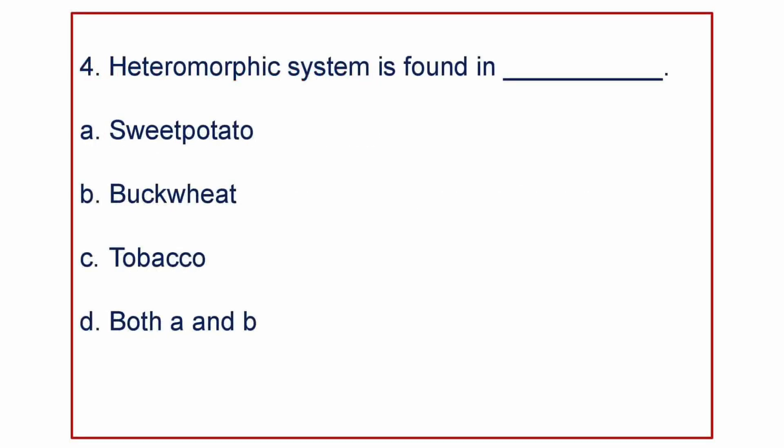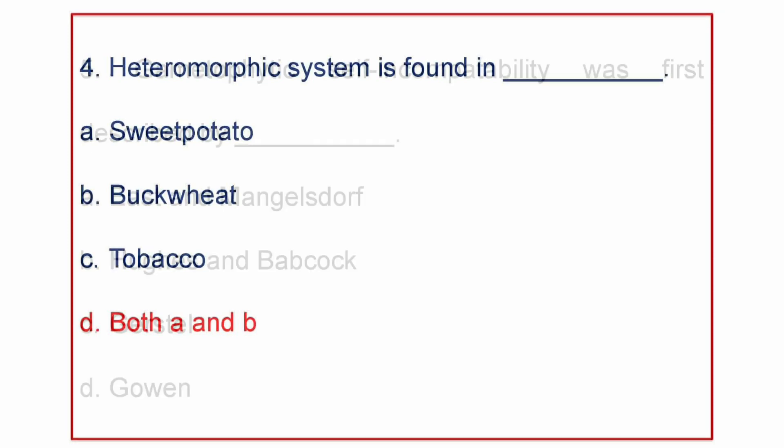Next question. Heteromorphic system is found in: A. Sweet potato, B. Buckwheat, C. Tobacco, or D. Both A and B. Heteromorphic system is found both in sweet potato and buckwheat.